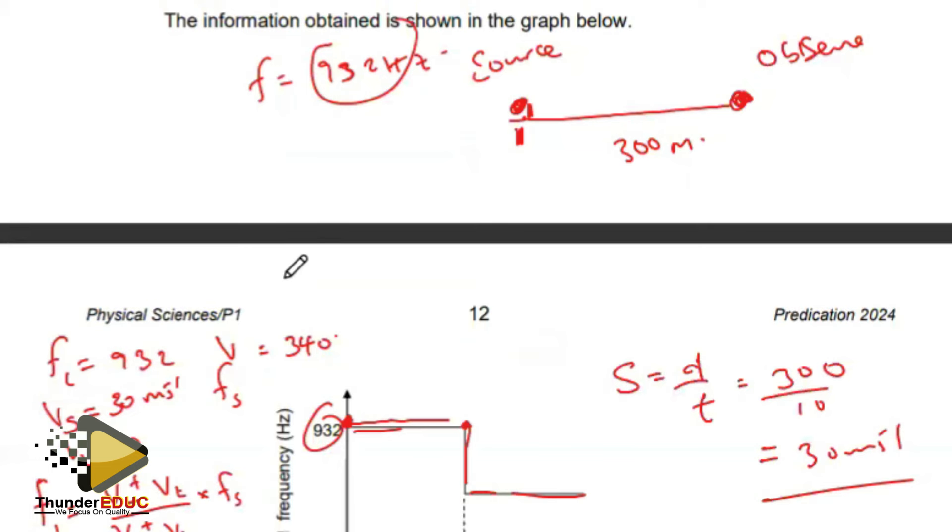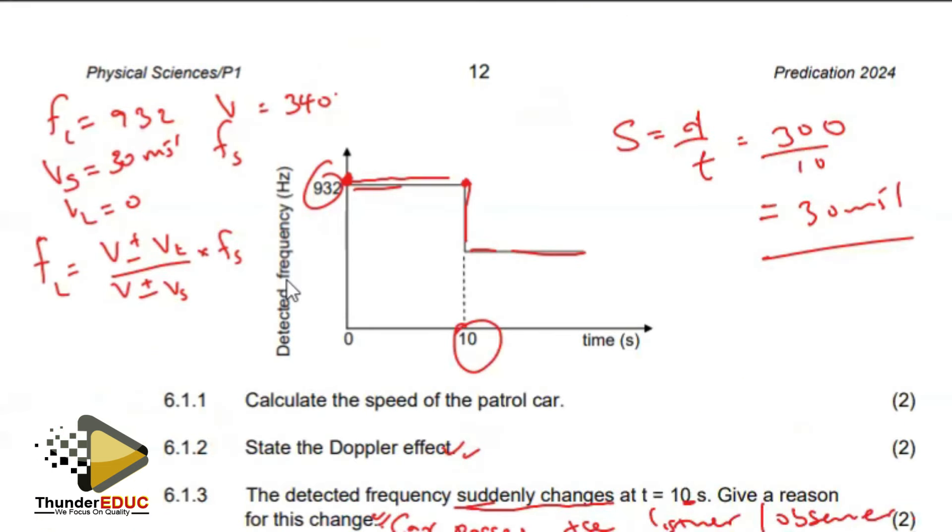This is going to be 932 equals my 340 minus the velocity of the listener, which is zero. Am I using a minus? That's going to be a plus since it's approaching. Then this is going to be 340 minus the 30 times the fS. 932 equals 340 over 310 times fS.